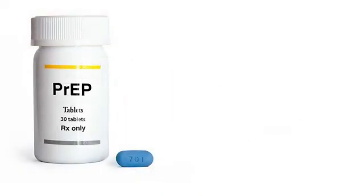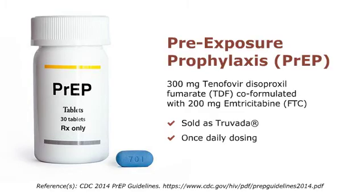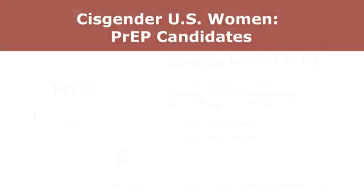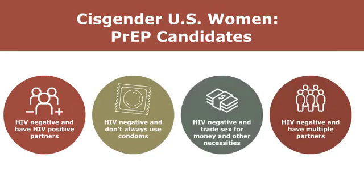Based on the information Sandra has shared, you recognize that she meets the Centers for Disease Control and Prevention (CDC) criteria for pre-exposure prophylaxis, also known as PrEP. In the U.S., the only FDA-approved PrEP is a single pill containing a co-formulation of 300 mg tenofovir and 200 mg emtricitabine. When taken consistently, PrEP has been shown to reduce the risk of HIV infection in people at high risk by up to 92%. You are aware of the 2014 CDC guidelines recommending PrEP for use in healthy adults at risk of acquiring HIV infection, including men who have sex with men, heterosexually active men and women, and people who inject drugs.